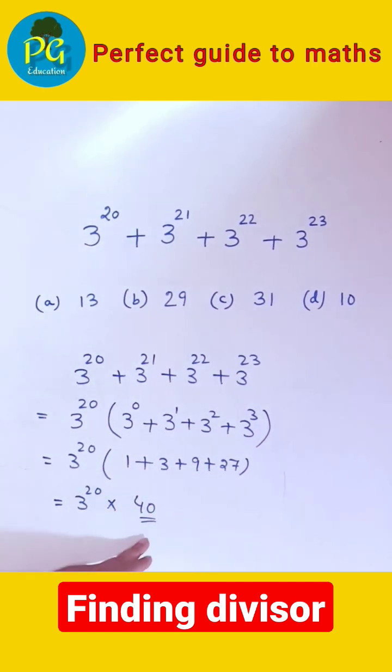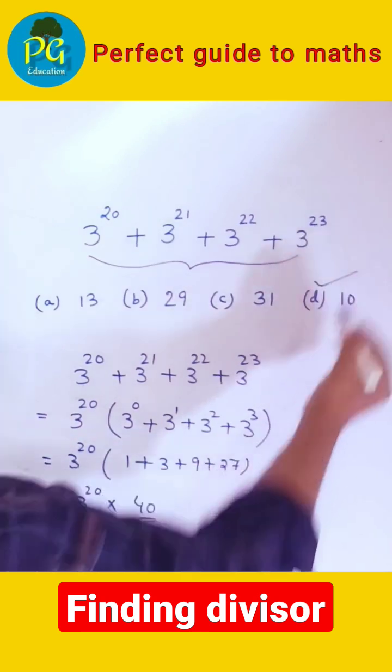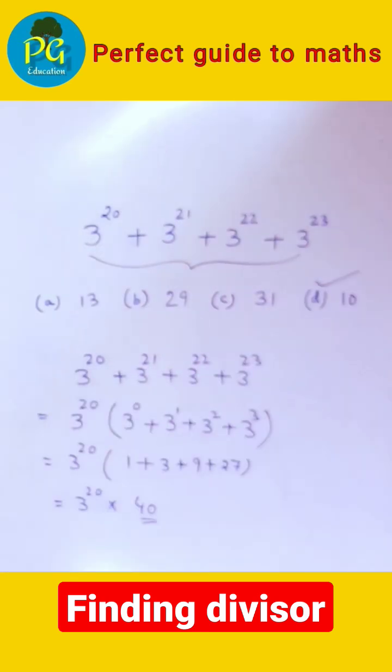Now you see 40 is divisible by 10. So from here we can say that this number is divisible by 10. So our correct option is option D. It is 10.